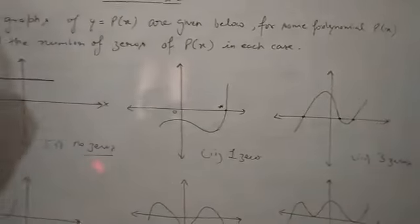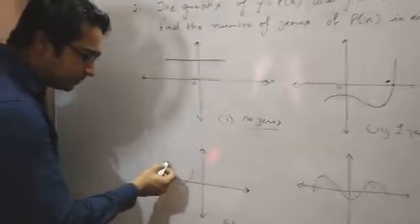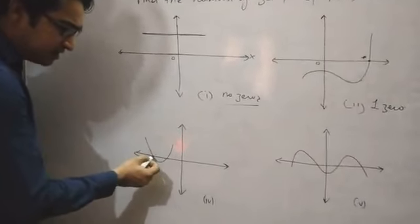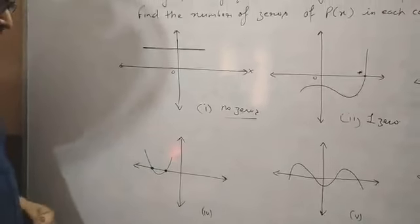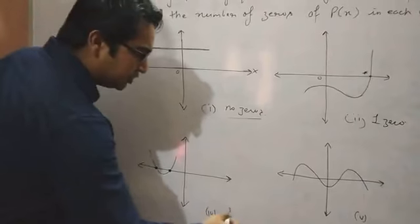Now see the fourth part. Here we see the parabola is here, and it cuts the x-axis at only two points. So there are two zeros.